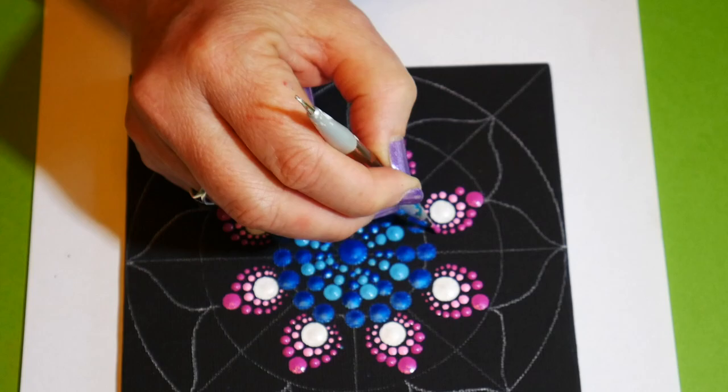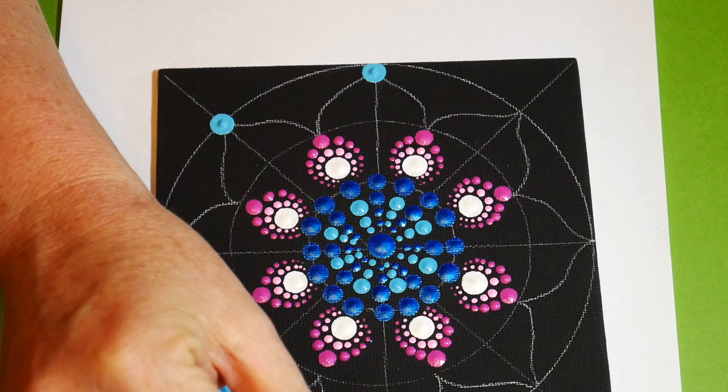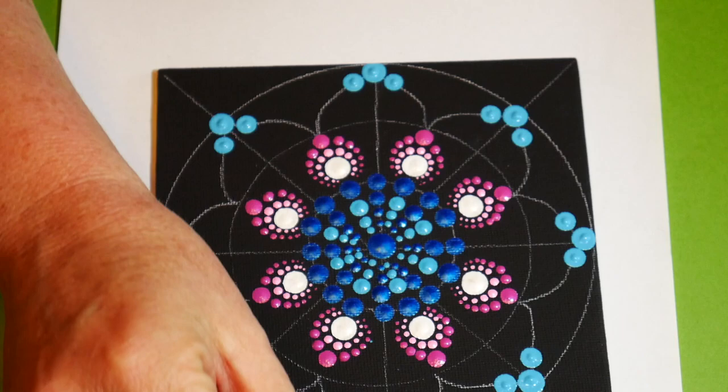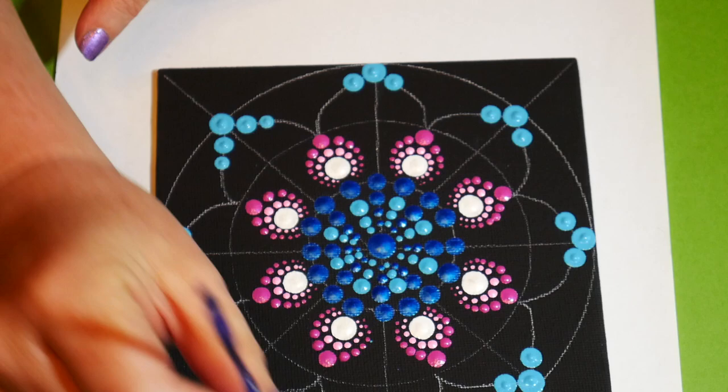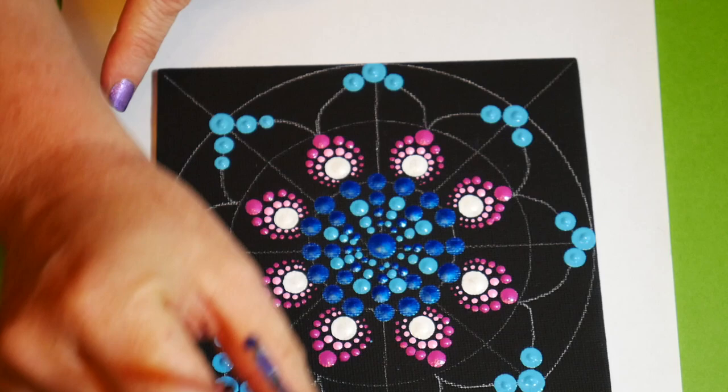And then on the very outside edge of each leaf point you're putting a large pale blue dot, and then using the smaller dots, working our way around those leaf edges.